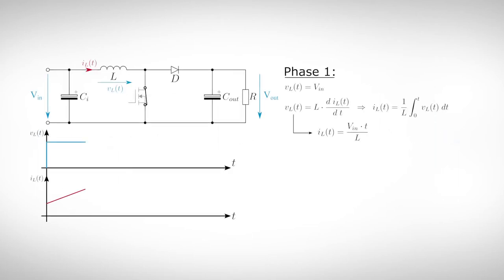Let us again start with the continuous mode and neglect our power losses in the circuit. If the transistor is switched on, the voltage over the inductor is equal to the input voltage. Not surprisingly, the current through the inductor again rises linearly according to the law of induction. We again assume that the output voltage is stable and therefore the diode is in reverse direction.